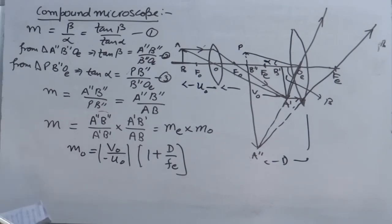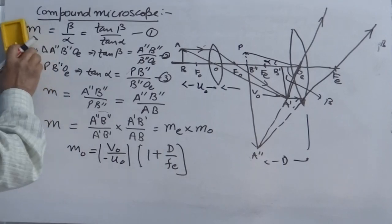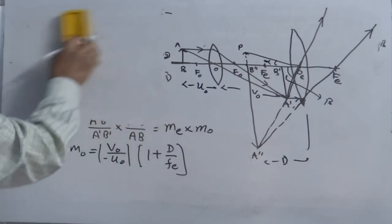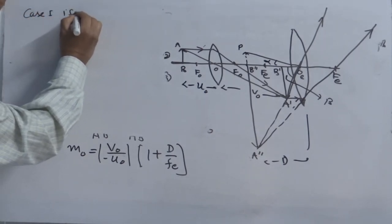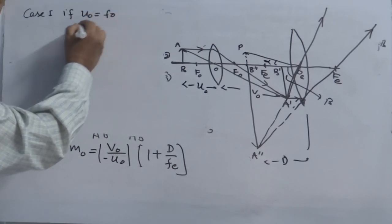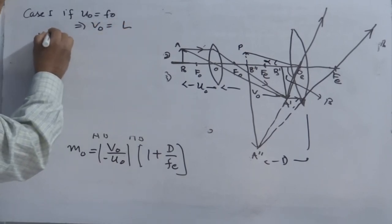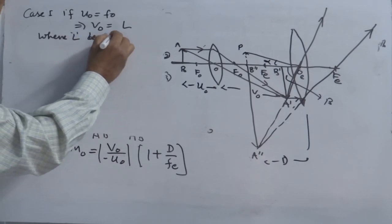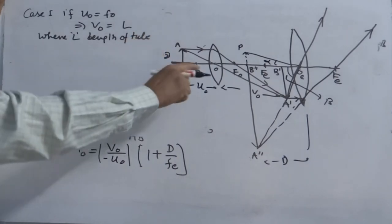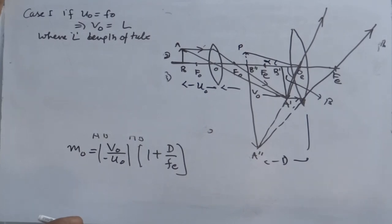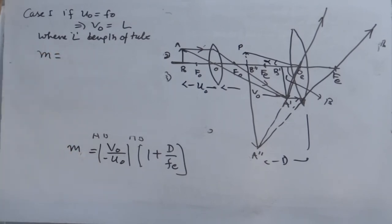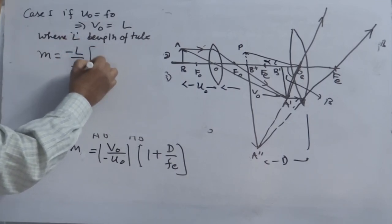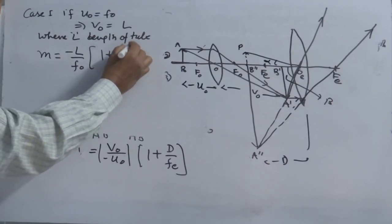There are two special cases. Case 1: since the focal length of the objective is very small, if u_o equals f_o and v_o equals L, where L is the length of the tube — the distance between the objective and eyepiece — then the formula becomes M equals minus (L / f_o) times (1 + D / f_e).